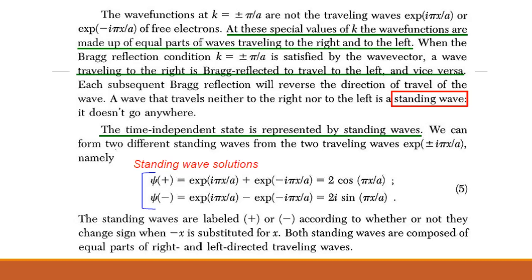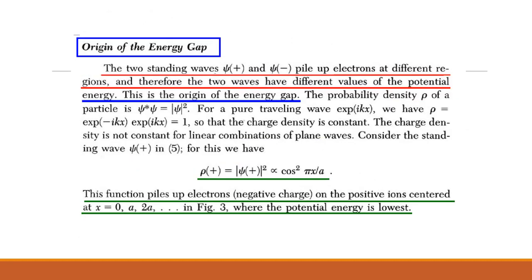There are two standing waves, psi plus and psi minus, depending on the combination of two traveling waves. In psi plus, the sine is invariant when x is replaced by minus x, whereas in psi minus, the sine changes. The two standing waves pile up electrons at different regions. Hence they have different values of potential energy. This results in a band gap.